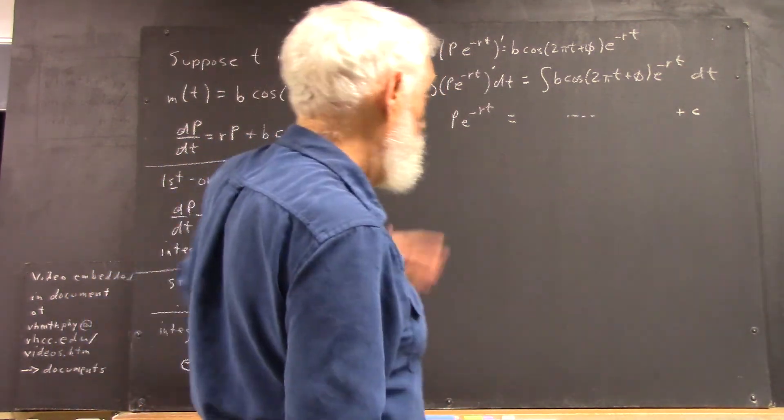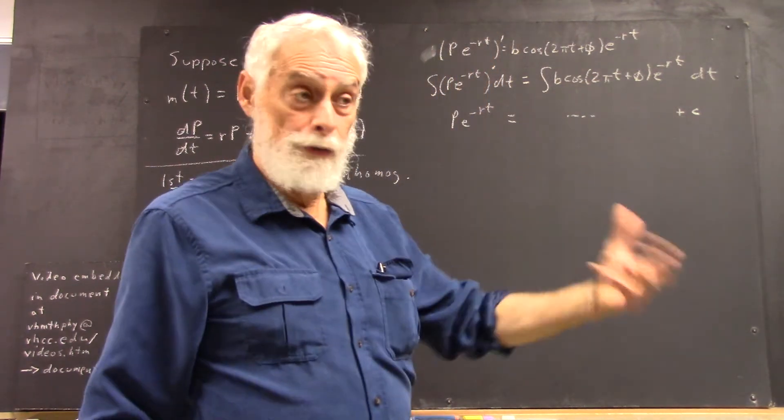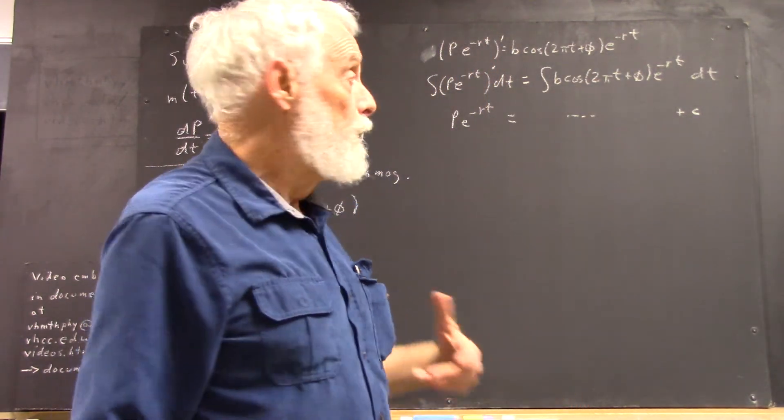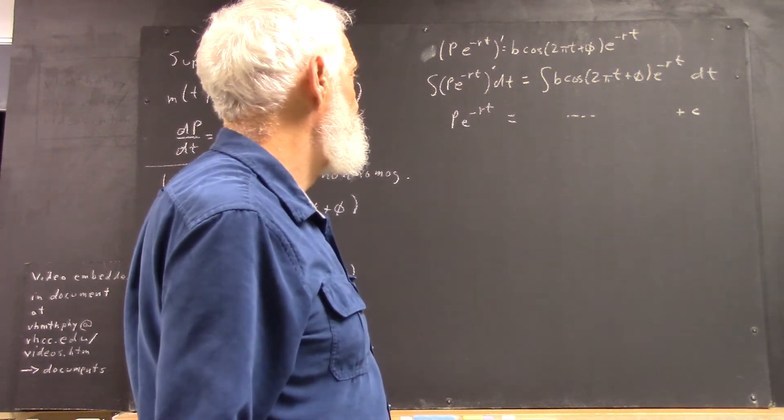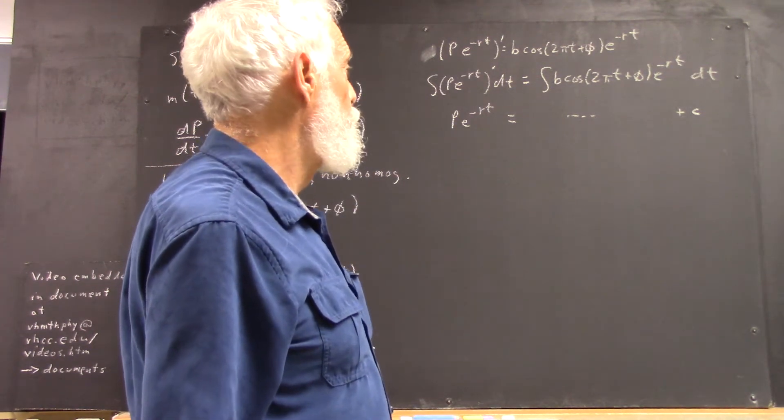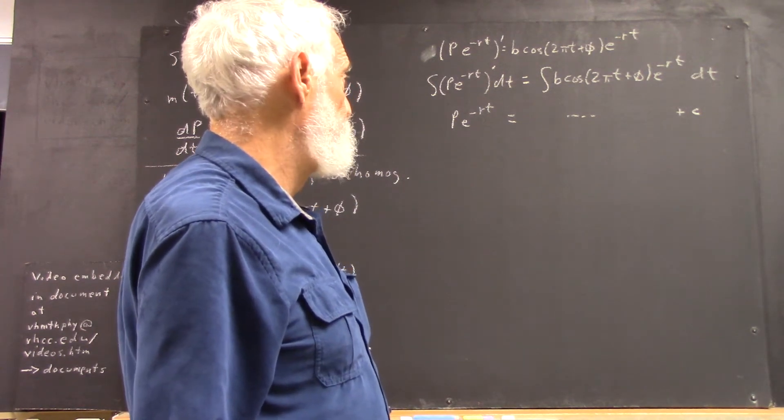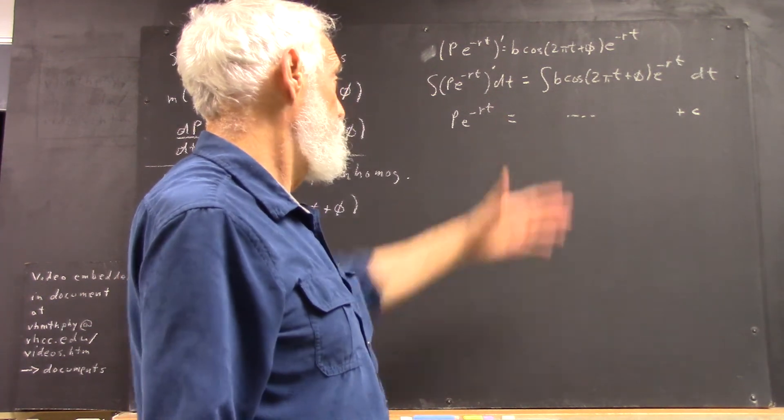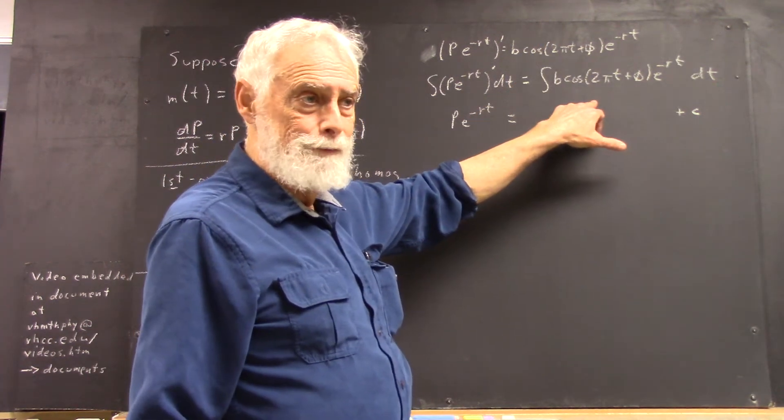Now, I'll just comment that you do this integral by using integration by parts. You're going to do it twice because of the cosine. And you're going to get a result, okay?